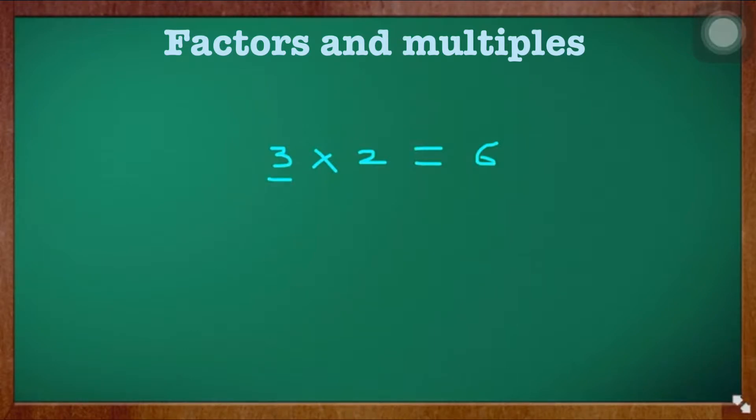This is called the multiplier, and 2 is called the multiplicand. The product of these two we call the factors of 6. Next, on the right-hand side, we have 6. This 6 is called the multiple of 3 and 2.